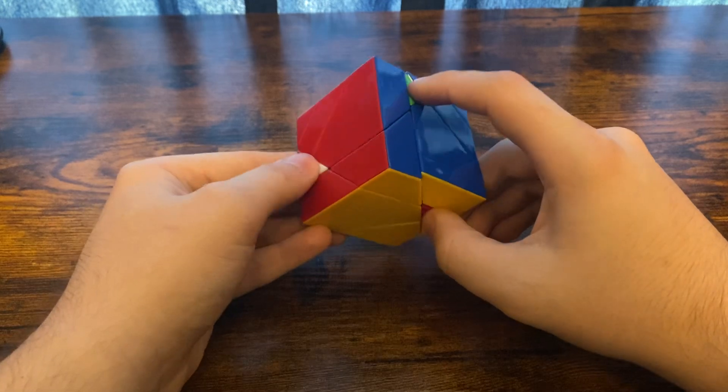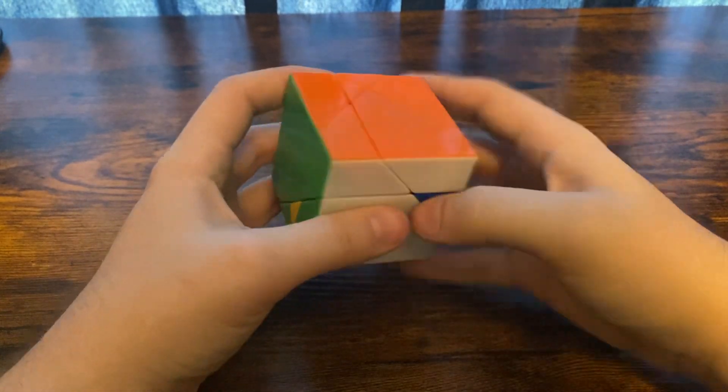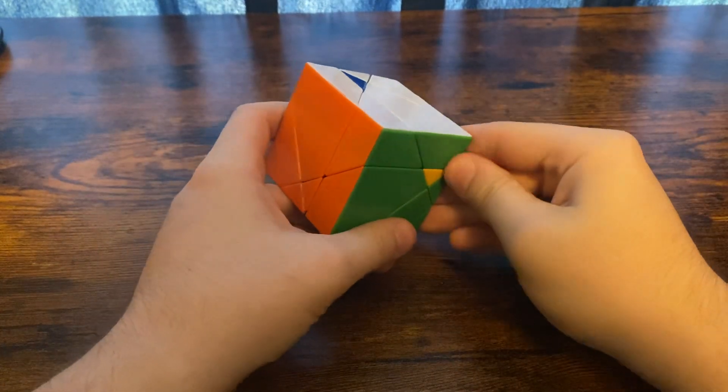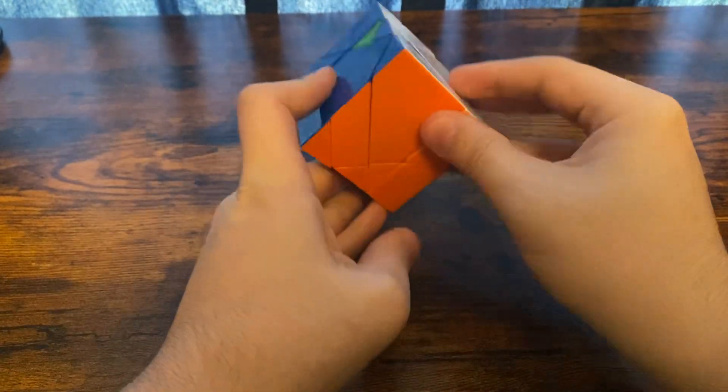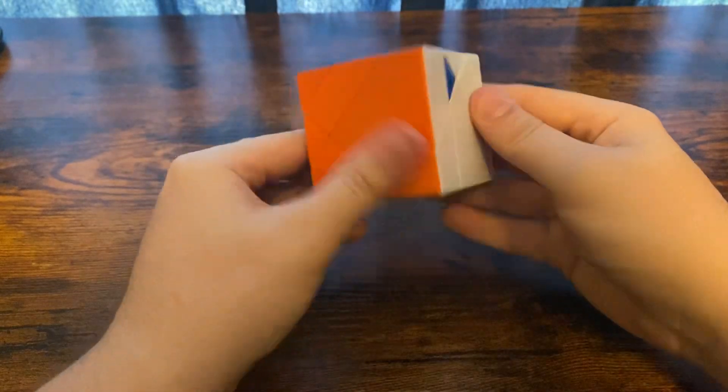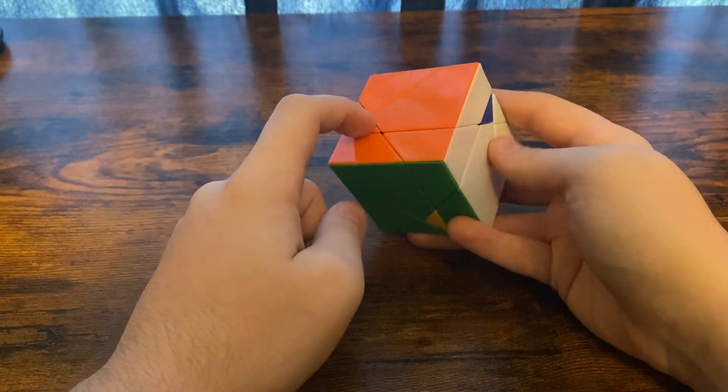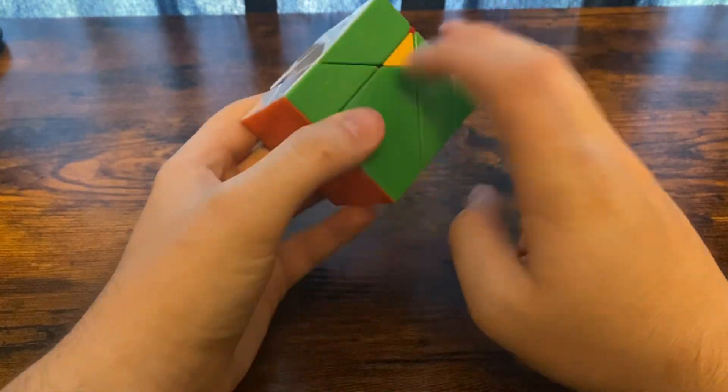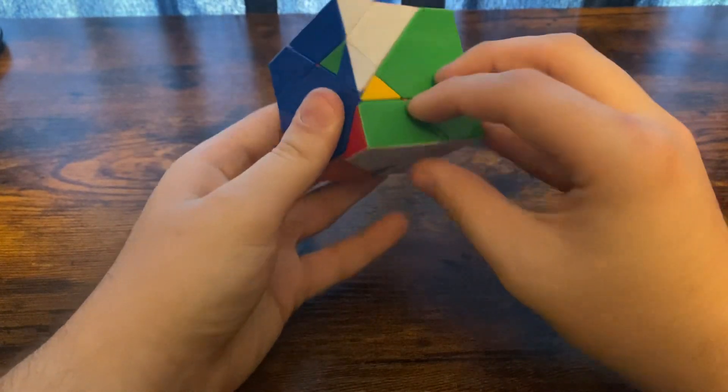There we go. We're going to solve these triangular pieces. First thing you want to do is get it so that you have two solved on one layer. We already have orange right here, so we're going to insert either the white one or the green one. We'll go and do the green one.